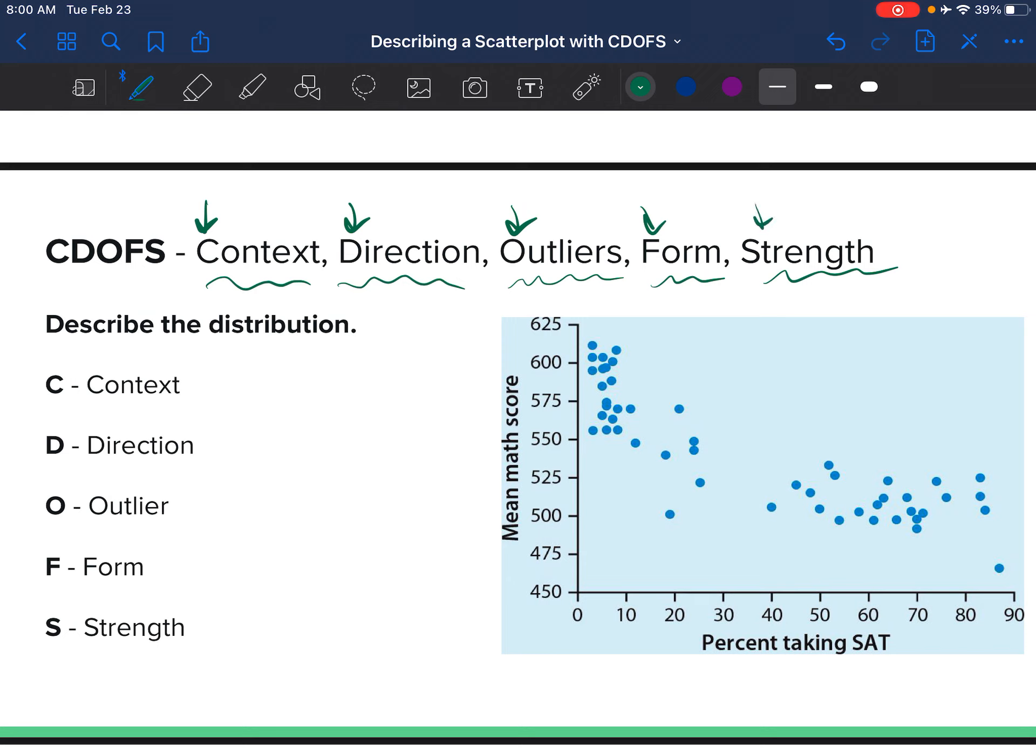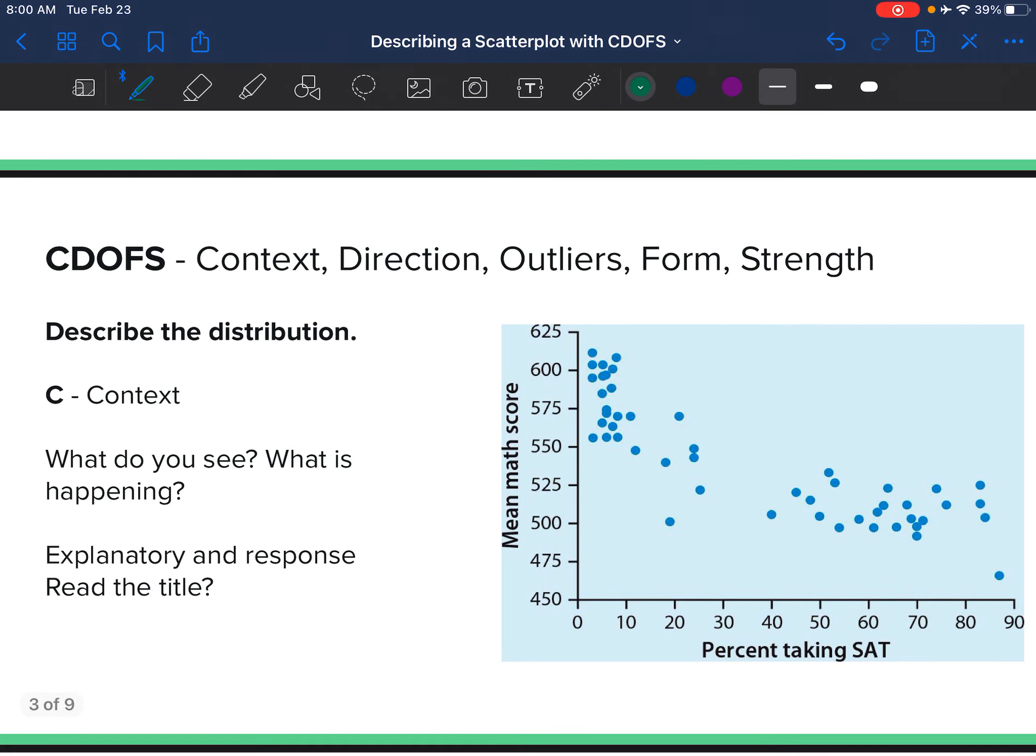We can remember that by using the first letter of each of these words in this acronym called CDOFS: Context, Direction, Outlier, Form, and Strength. You have to have all five of these for your answer to be correct and complete.